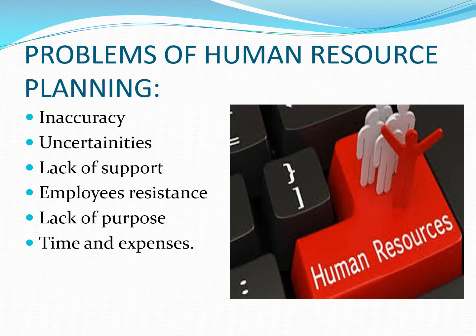The last topic is problems of human resource planning. When we study any planning process, there are always drawbacks, limitations, and problems. The first is inaccuracy — the data we are predicting may be inaccurate, as predictions are not always correct. Next is uncertainties — many environmental changes occur that are uncertain and cannot be predicted, and due to those uncertain changes, our planning process may prove to be wrong.